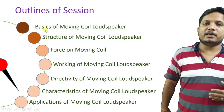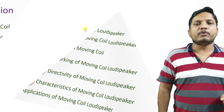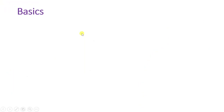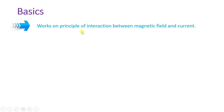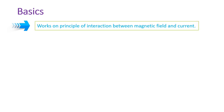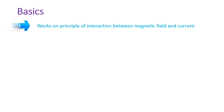Let us begin with the basics of the moving coil loudspeaker. The working principle is based on the interaction between a magnetic field and current. Based on electromagnetic induction, force acts on the coil, and that force is connected with the diaphragm, so the diaphragm moves to and fro, generating sound.